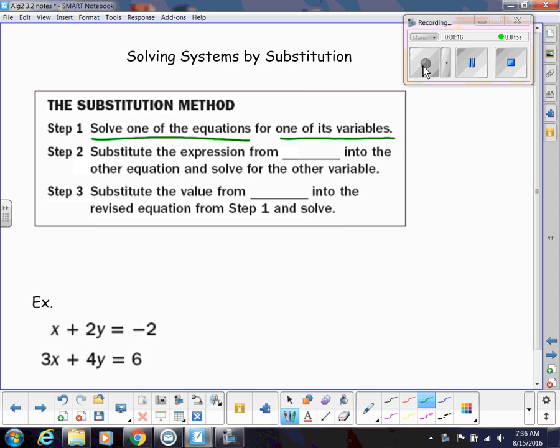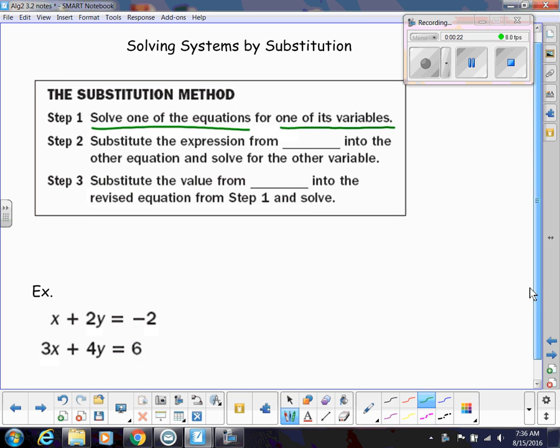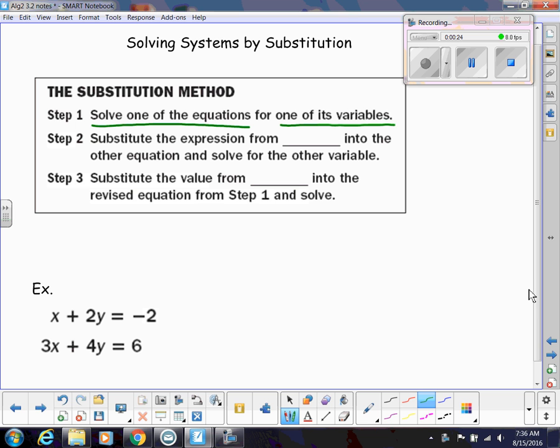You can either pick x or y to isolate on one side of the equation by itself. For example, in this system of equations here, I would probably choose to isolate that x. That would mean I would want to subtract 2y on both sides. So if I complete step one for this process, it would look like this: x equals negative 2 minus 2y.